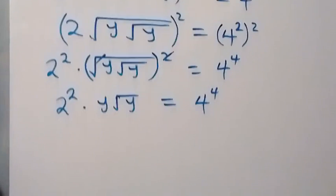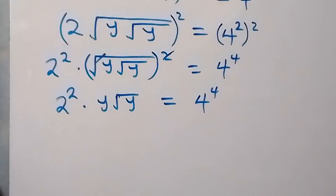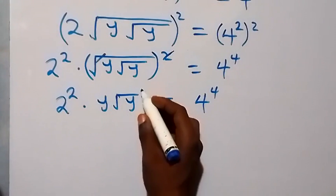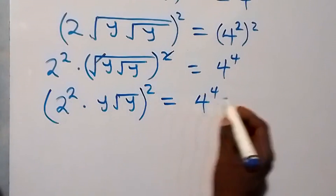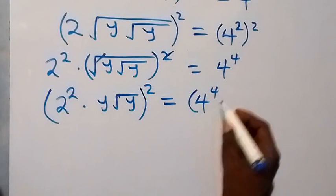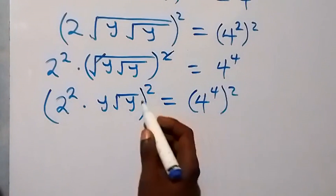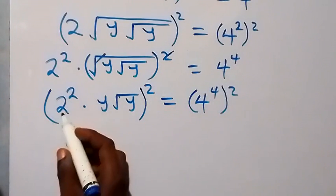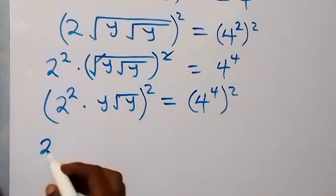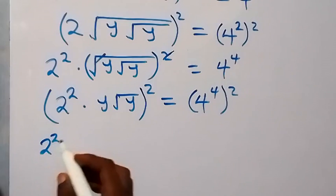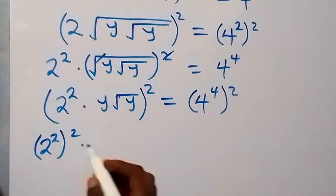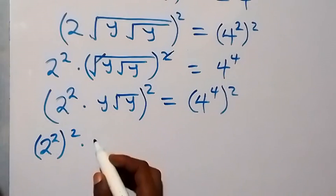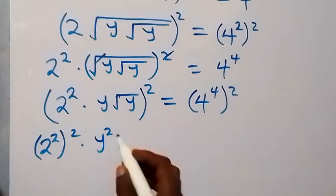Then in the next step we can square both sides again. We square this side, and this square will affect 2 squared — so we have 2 squared squared — then times to affect y as well: y squared, then times root y squared.